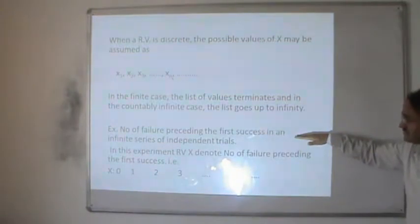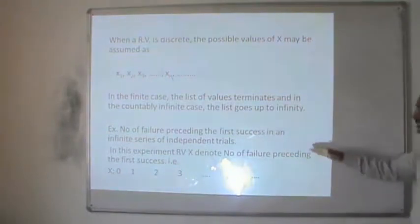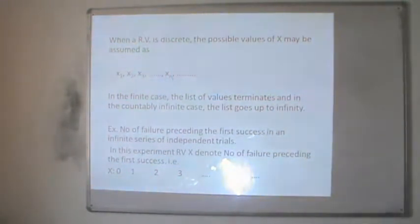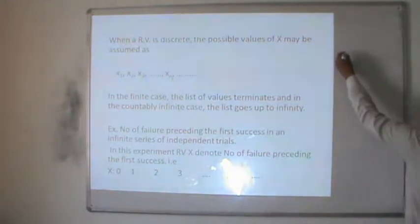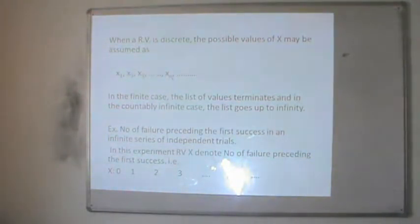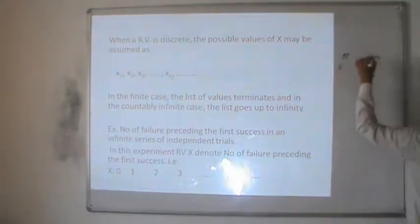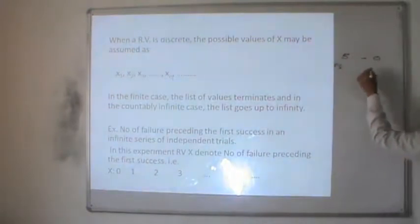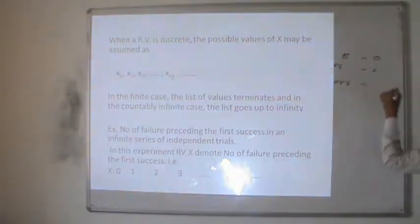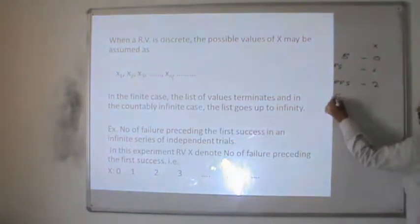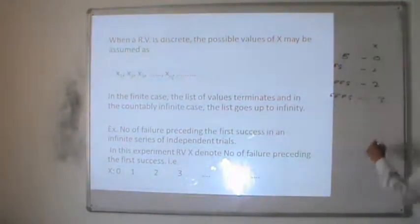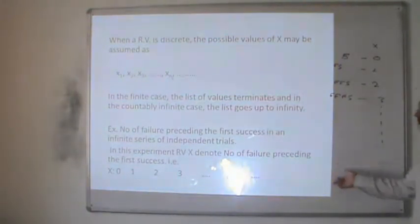An example of the countably infinite case is the number of failures preceding the first success in an infinite series of independent trials where the probability of success is fixed. In this experiment, the random variable x denotes the number of failures preceding the first success. Outcomes may be: zero failures (success on first trial), one failure then success, two failures then success, three failures then success, and this goes up to infinity. So this is an example of the countably infinite case where the random variable assumes discrete values.